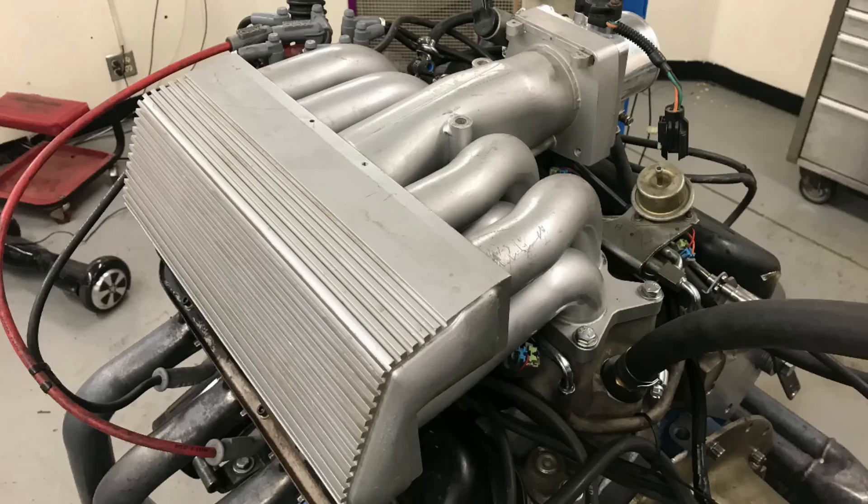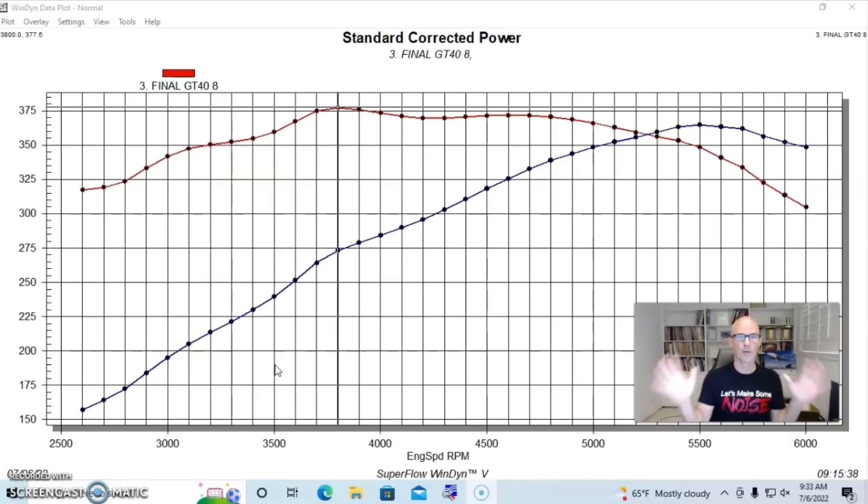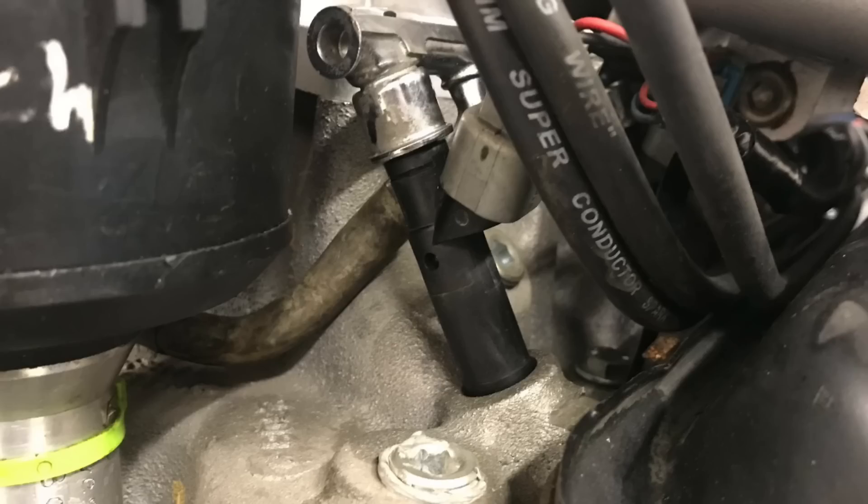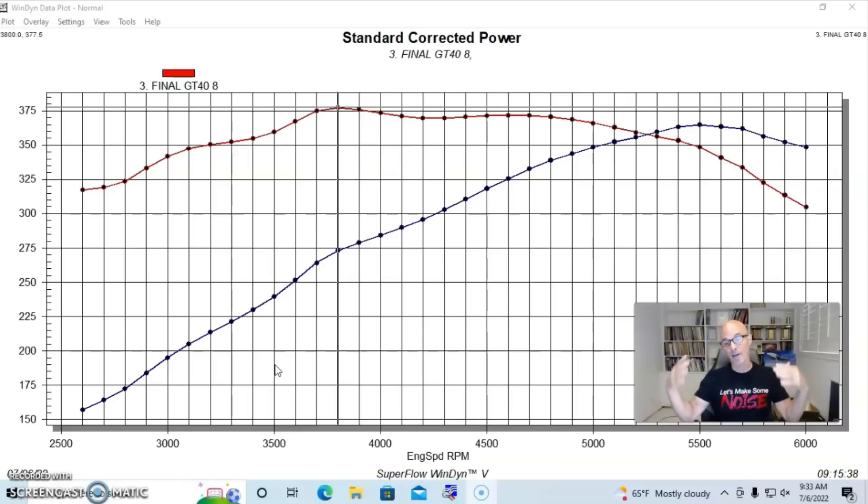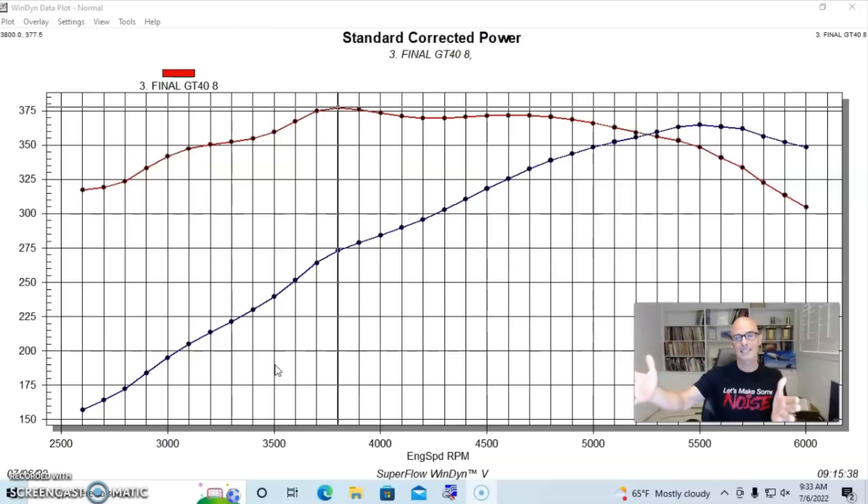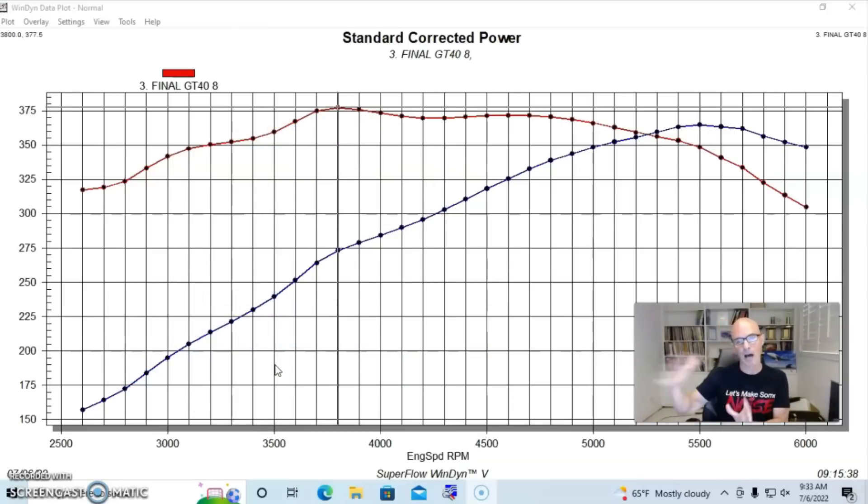And we ran this with the GT40 tubular intake manifold and a 65-millimeter AccuFab throttle body. All of this was tuned with the Holley HP management system when we had big injectors in it. So we could tune the air fuel and the timing and optimize the combination of each one of these intake manifolds. And remember, this GT40 was originally offered as the upper intake manifold for the naturally aspirated 351 Lightning back in the day. And this intake manifold was offered by the guys at Ford Racing as a performance upgrade for your 5-liter Mustang.